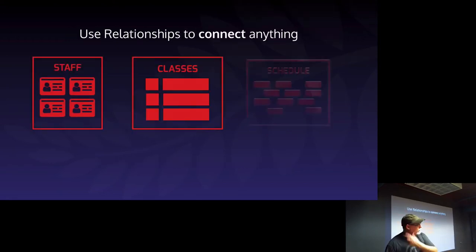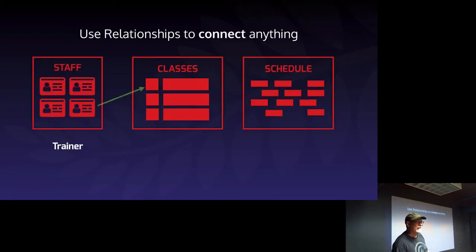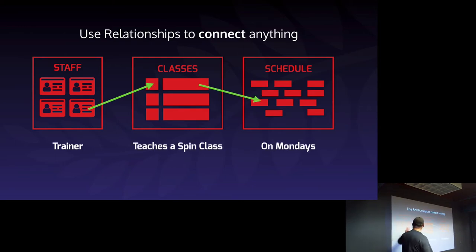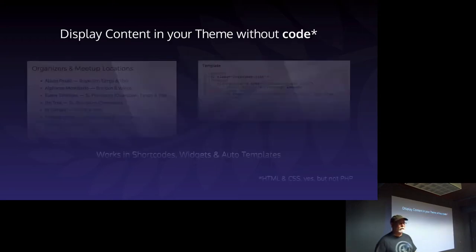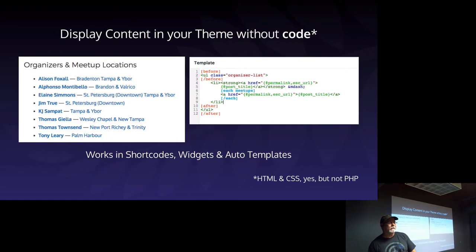You can use relationships to connect anything. For example: a staff member who is a trainer teaches a spin class on Mondays — that's three different types of content, but it's all connected. You can also display content in your theme without code.